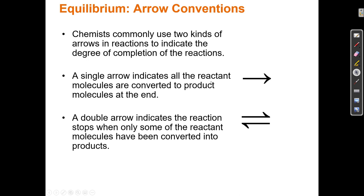So if I start with A plus B and that goes to C plus D, then at the beginning of the reaction I start with 100% A plus B, and at the end of the reaction all of that is gone and I only have 100% C plus D. That's generally the way we would interpret this single arrow. But a double-headed arrow indicates that the reaction stops at some point — stops consuming reactant — before the reactant is completely converted into product.